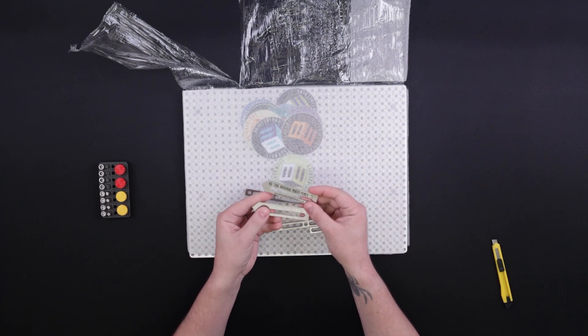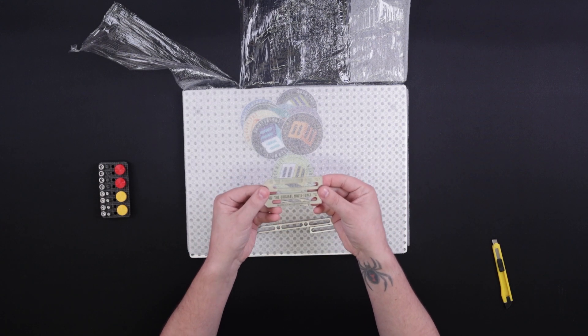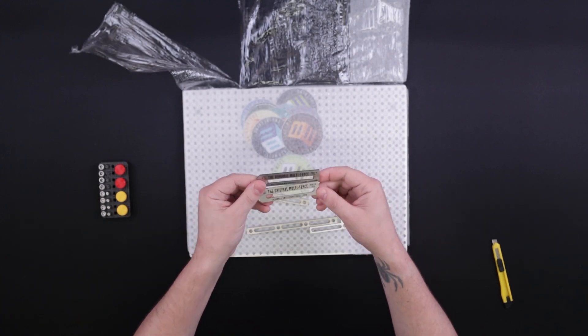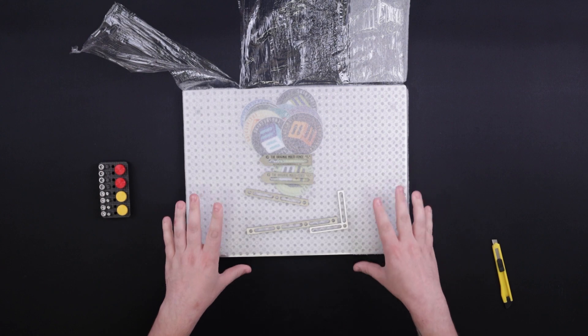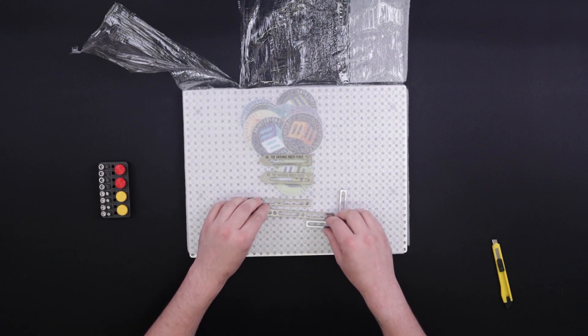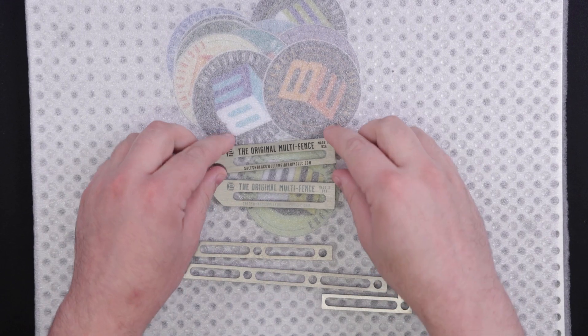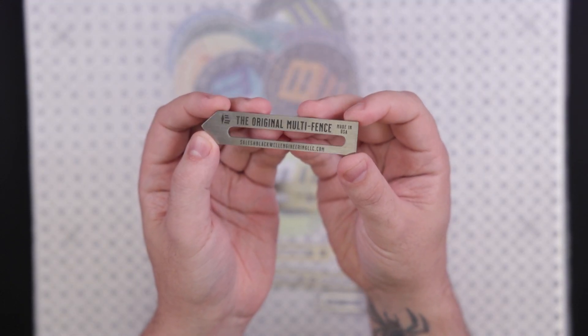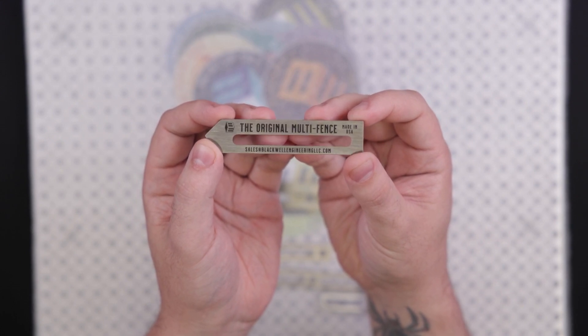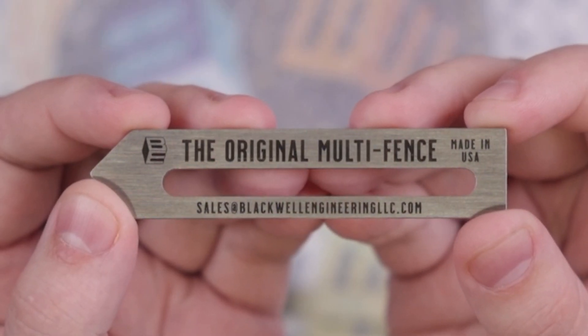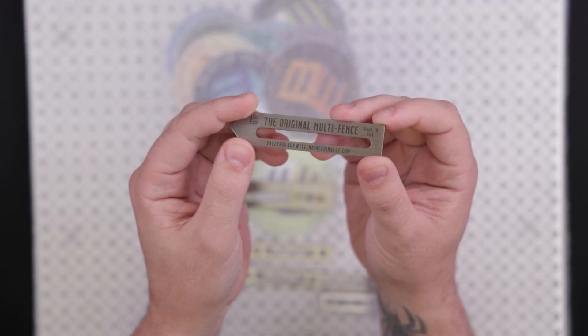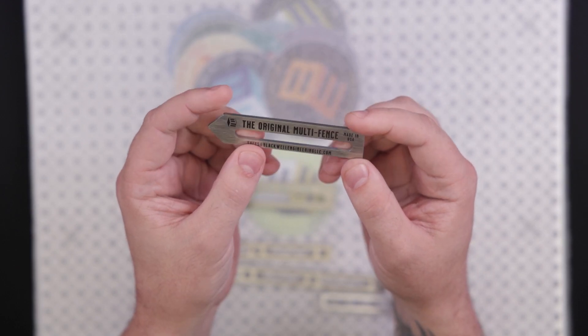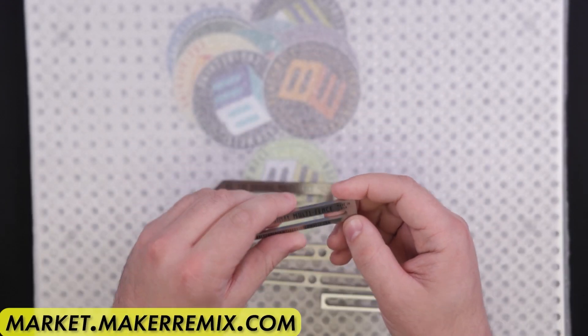So right off the bat here, we have a couple fence items. The original multi-fence marked on it there, made in the USA. And we'll go ahead and actually punch in so you guys can take a closer look at these fences before we move on. So here's the actual part itself. The original multi-fence, really nice mark on there. And of course the email address, sales at blackwellengineering.com. Remember you can find all of this stuff right on our own marketplace, Maker Remix. That's market.makerremix.com if you want to check that out.